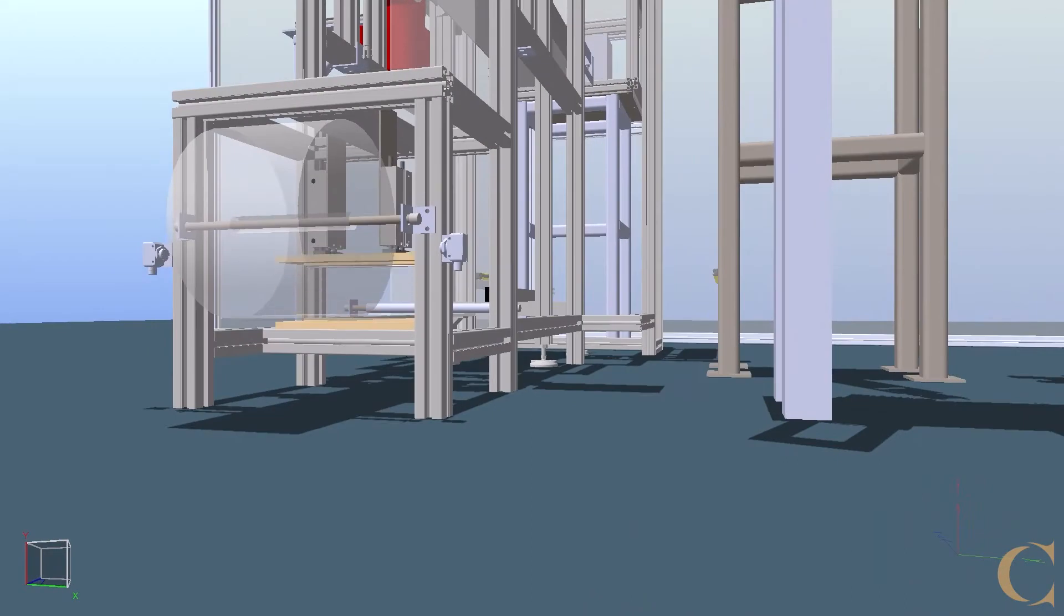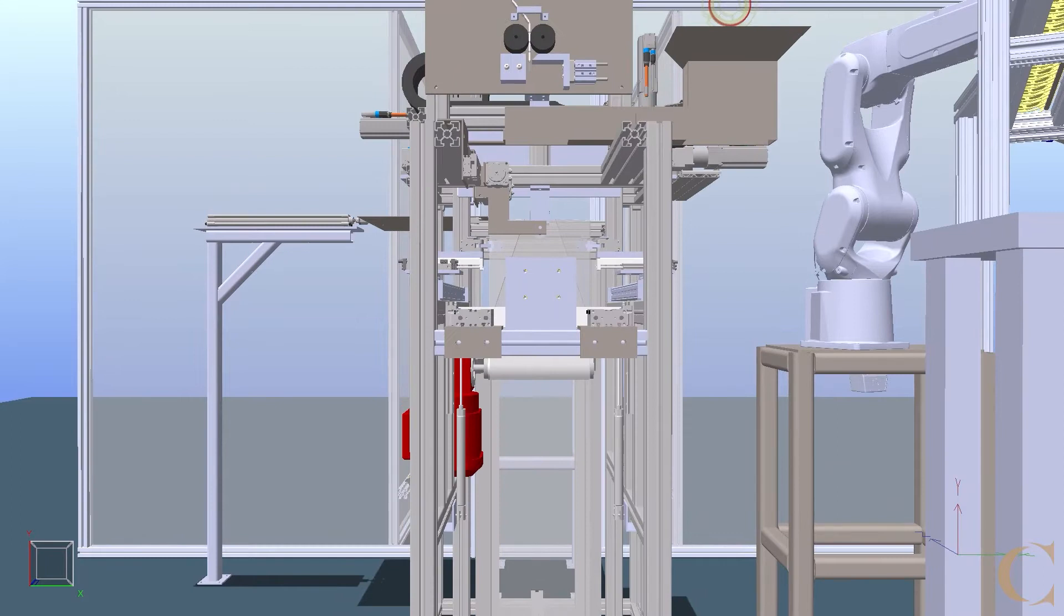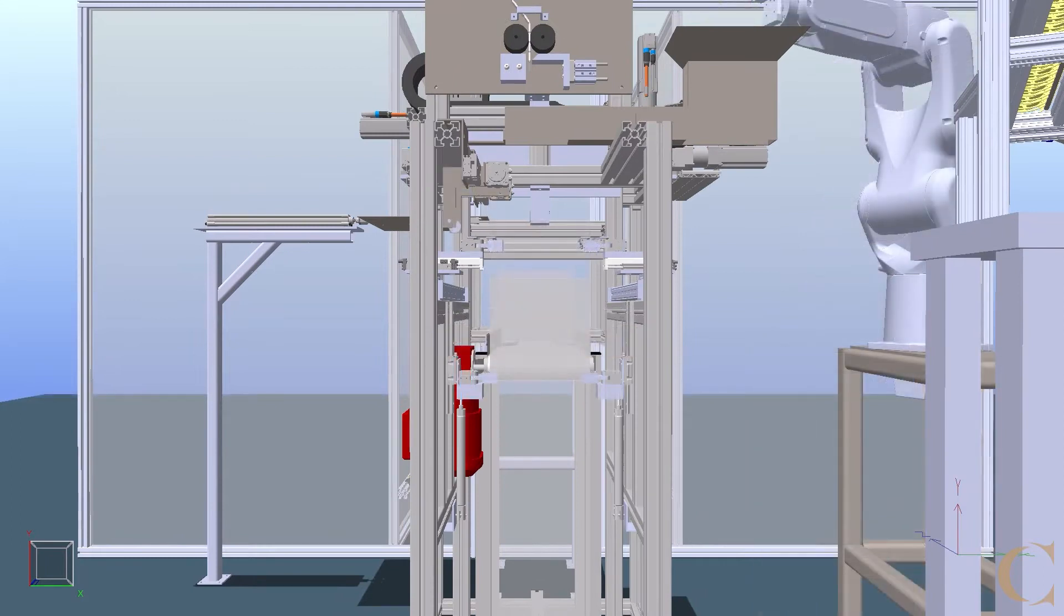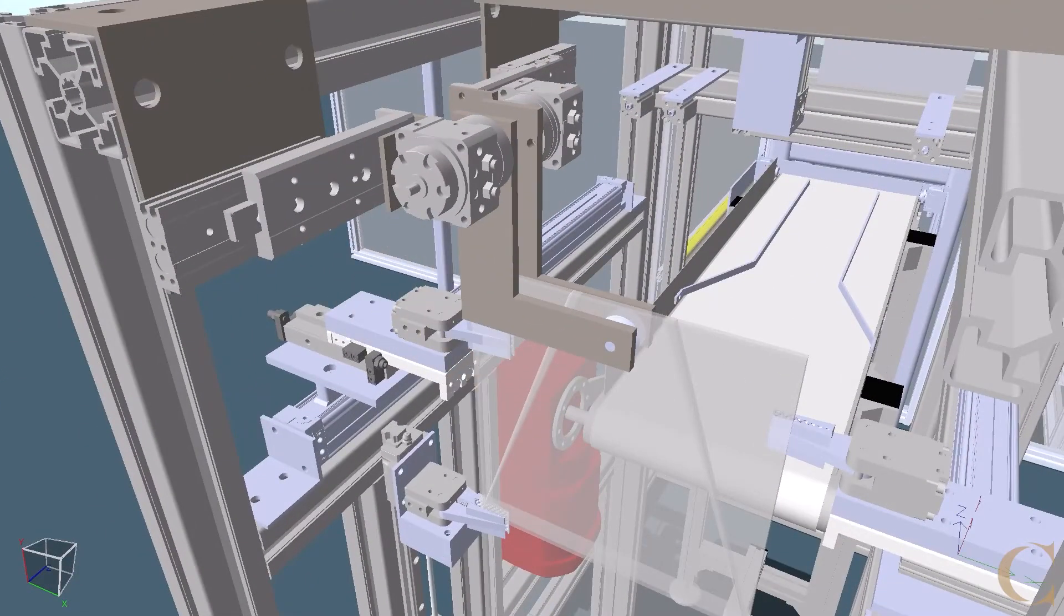The packaging process starts with heat sealing the bottom of the vacuum bag. Disclaimer: some assemblies will be hidden as needed for better visibility of demonstration. Pneumatic grippers feed the vacuum seal roll upwards and suction is used to open the bag.